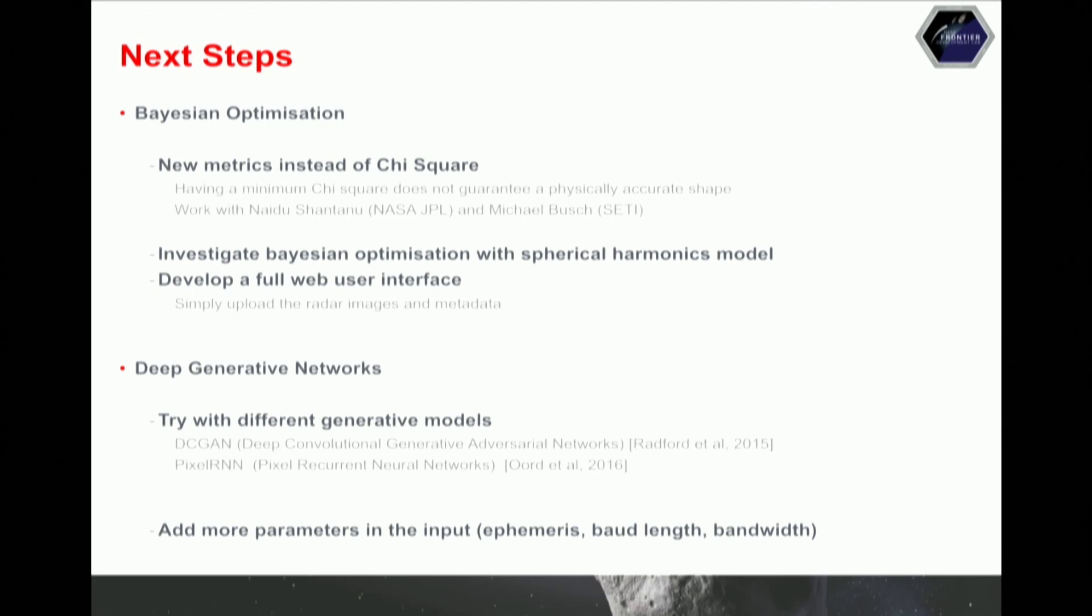Now to conclude, we have different ideas on how to continue our work. The Bayesian optimization, we were thinking of introducing new metrics instead of the chi-square. We just noticed, after we discussed with Michael Bush, our mentor, that basically sometimes you can get a minimum chi-square, but this doesn't reflect the reality, it doesn't guarantee a physically accurate shape. And another thing that we would like to work on is like use more complex models like the spherical harmonics model. And we would like, because the people who use shape are not computer scientists, we would like to develop some kind of a web user interface where the people are able to upload their radar images, give some metadata, give a budget, a time budget, like I would like you to process this for 24 hours, and then it will give you some of the results on the angles that you can extract.